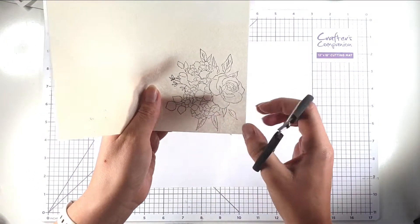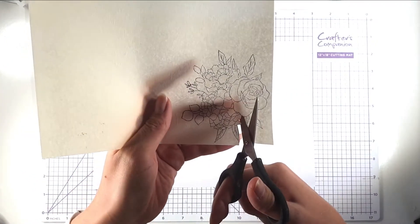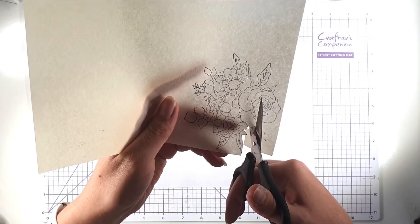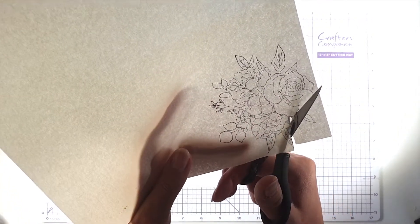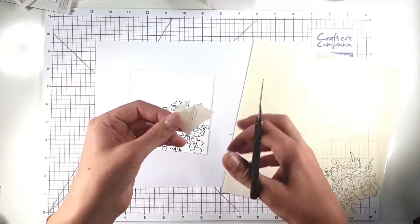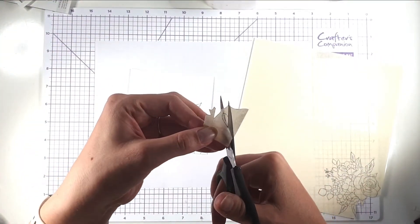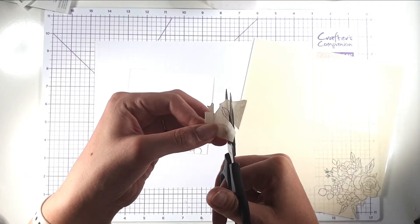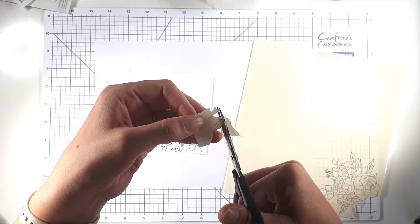So just here where that's got a little stem I'm actually just going to cut that stem off and I'm going to cut out the leaf separately.